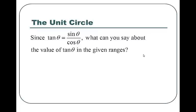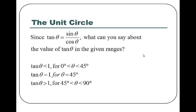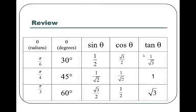Now tangent is sine over cosine — that's not news. For angles between 0 and 45 degrees, tangent is less than 1 because your cosine is bigger than your sine. Therefore all angles between 0 and 45 degrees have a tangent less than 1. At 45 degrees, tangent equals 1 because sine and cosine equal each other. Angles between 45 degrees and 90 have a tangent larger than 1 because the sine is bigger than the cosine. All this helps us keep all these numbers straight.